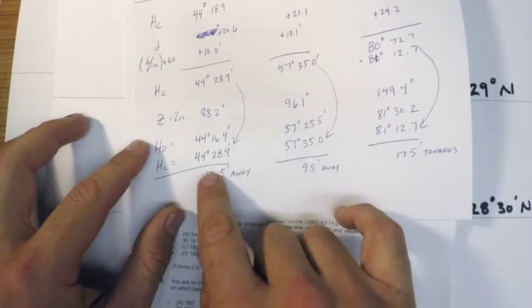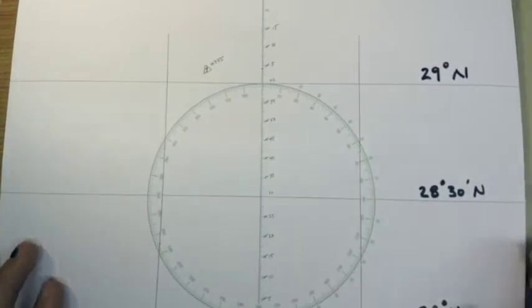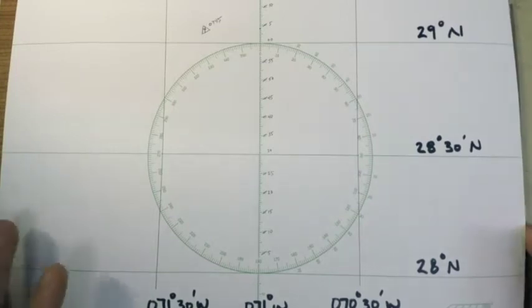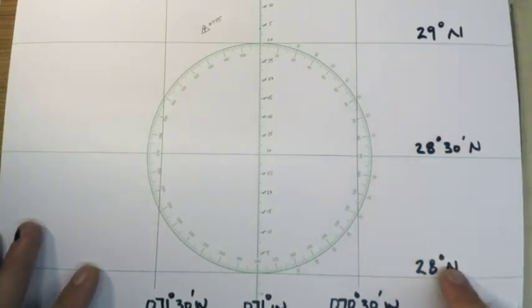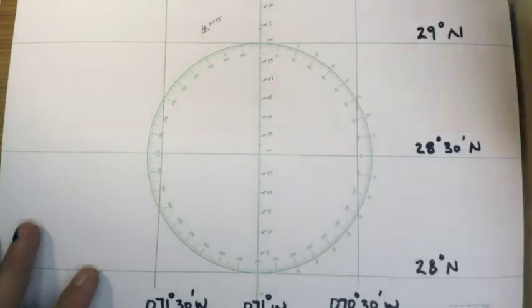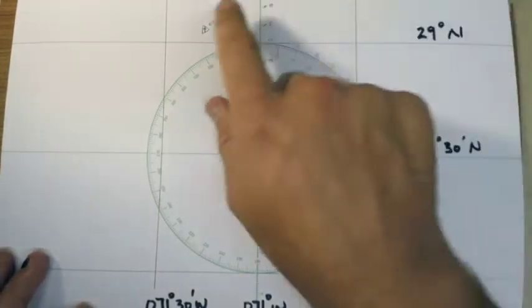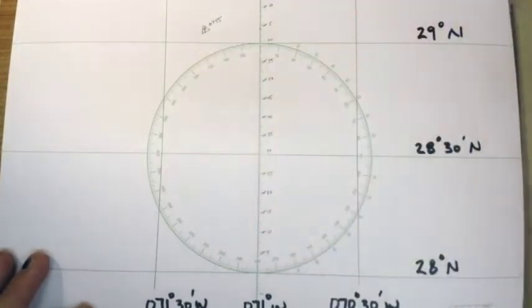What I've done since you were last here was I filled out this universal plotting sheet so that we can plot our final answer on it. Notice that I set this up at 30 minute intervals, so I shrunk all these down so that this is 30 minutes instead of one degree.